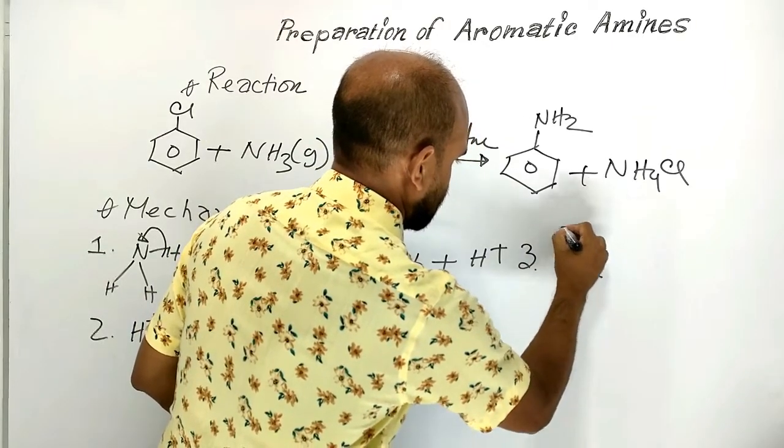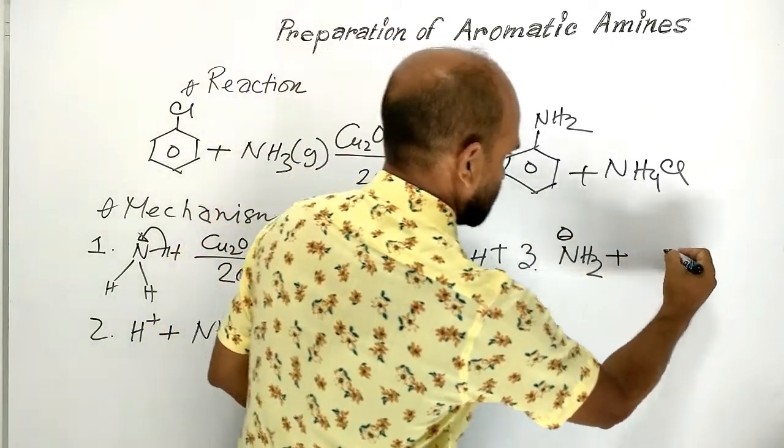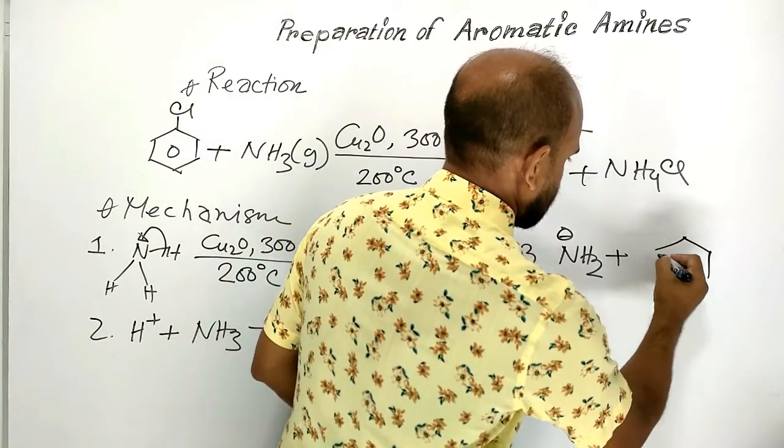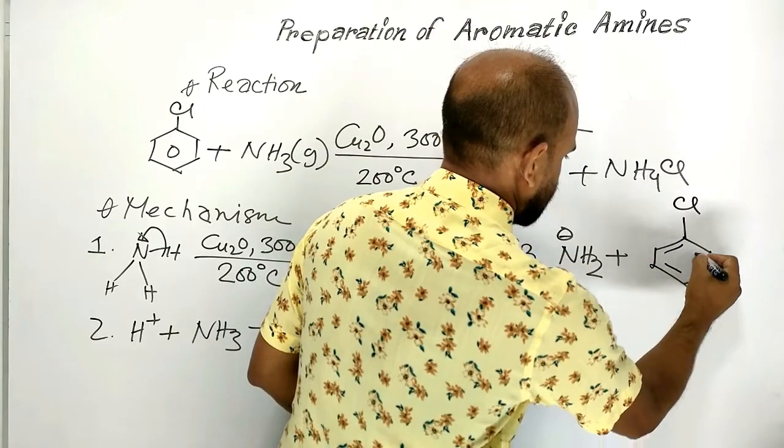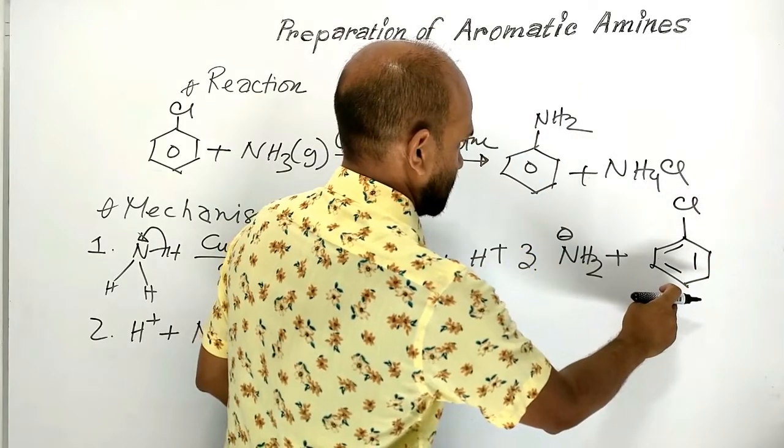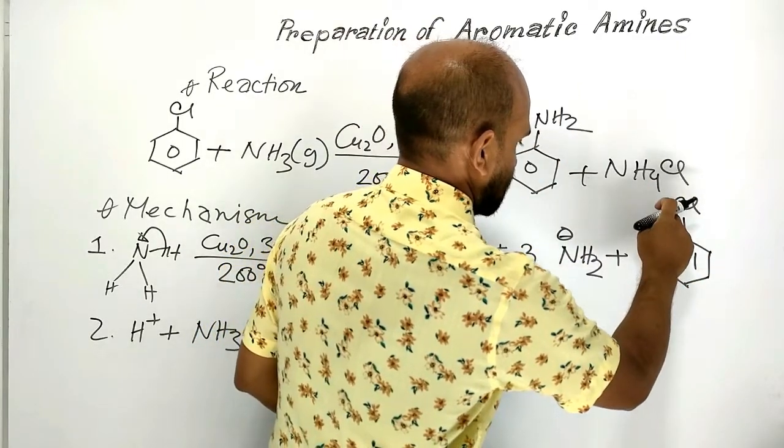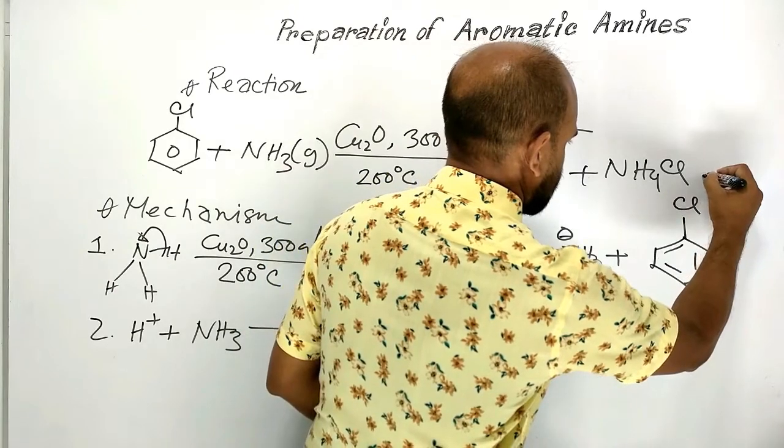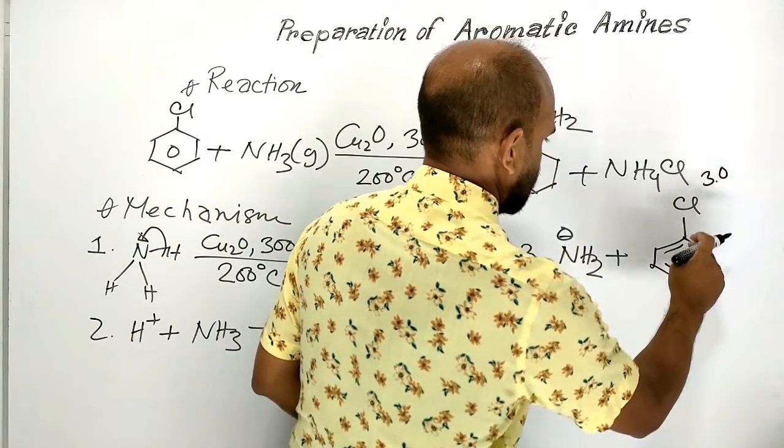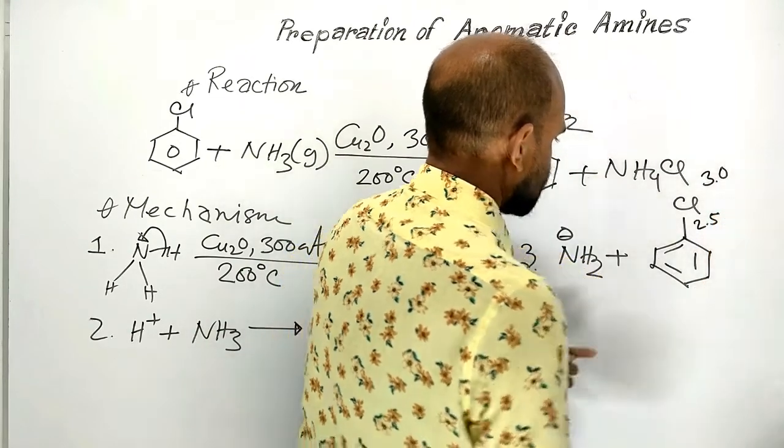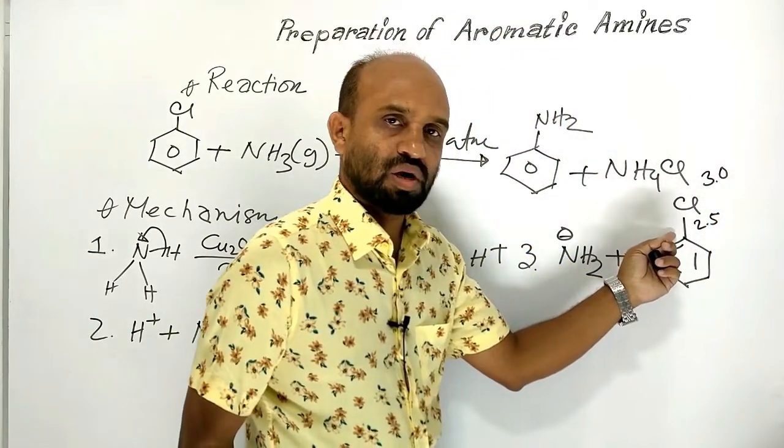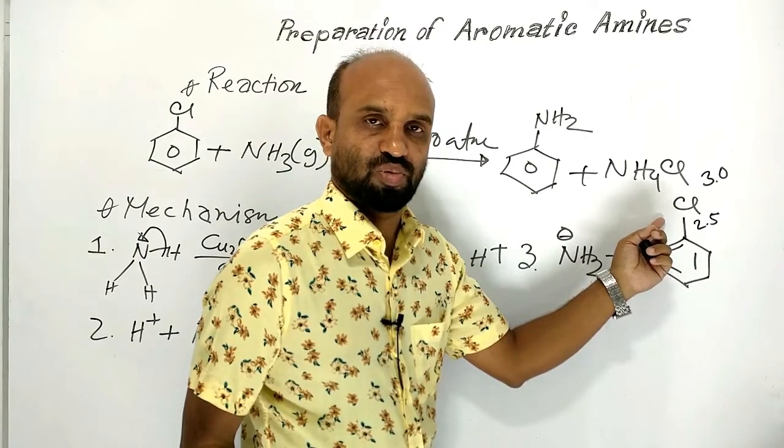Amide ion reacts with chlorobenzene. Here electronegativity of chlorine is 3.0, carbon 2.5, so the carbon-chlorine bond is polarized.